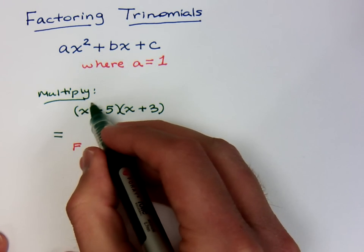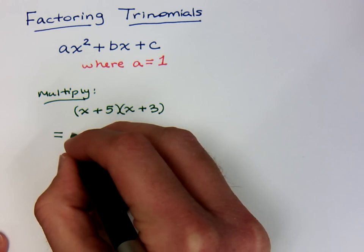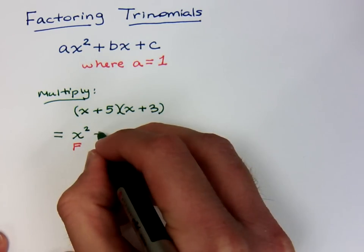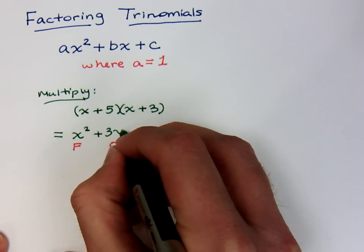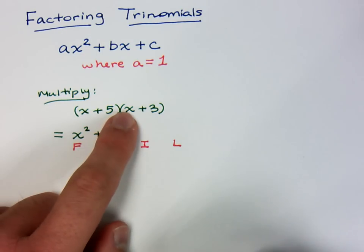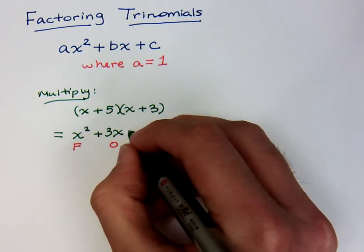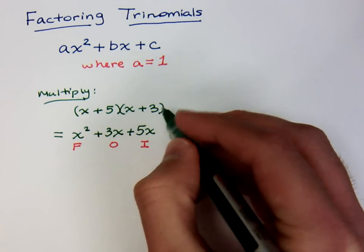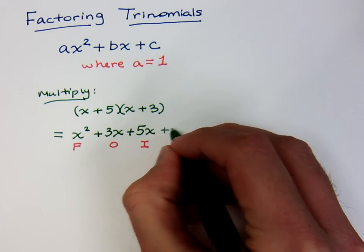When I multiply this, the product of the first terms, x times x is x squared. Product of the outside terms, x times 3 is 3x. Then I look at the product of the inside terms, 5 times x gives me a positive 5x, and then 5 times 3 is the product of the last terms, and that's 15.